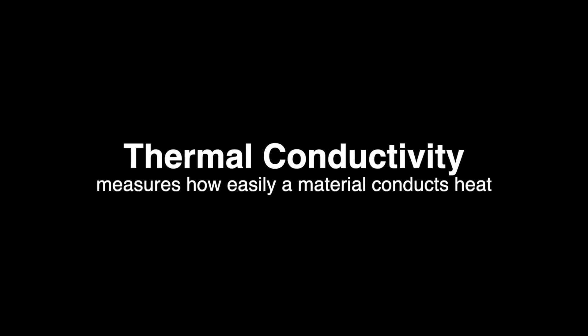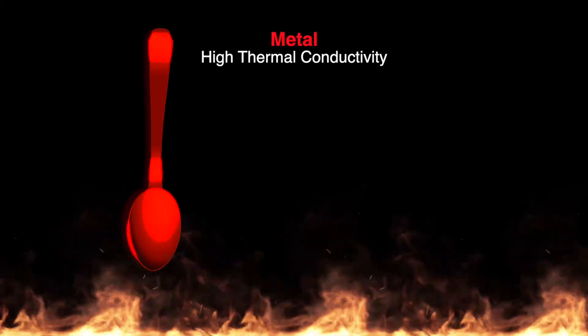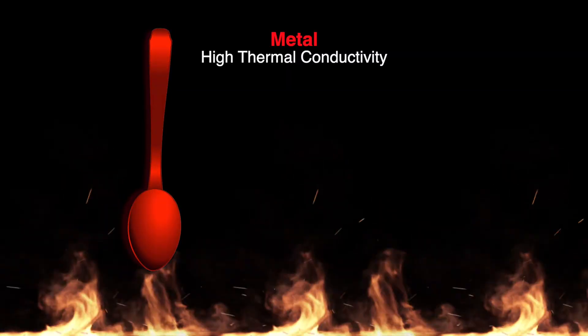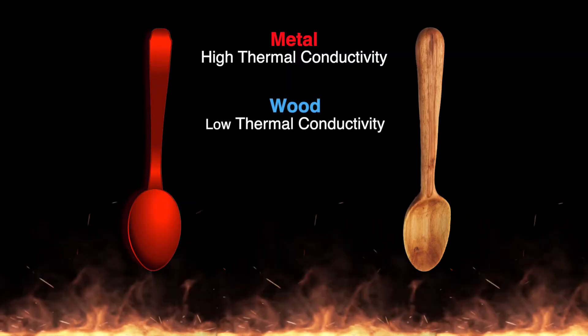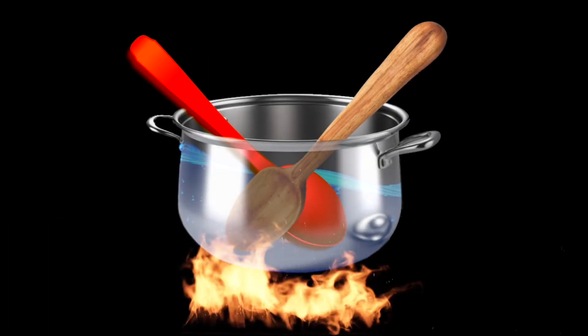Thermal conductivity measures how easily a material conducts heat. Metals, for instance, have high thermal conductivity, which is why they heat up quickly. Wood, however, conducts heat much more slowly, which is why wooden handles on cooking utensils stay cool compared to metal ones.